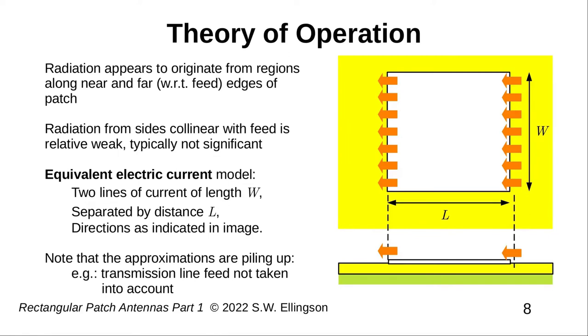For example, we've ignored the presence of the transmission line that's feeding this patch, and also we've ignored any component of the fringing fields which is not perfectly aligned, as shown here.